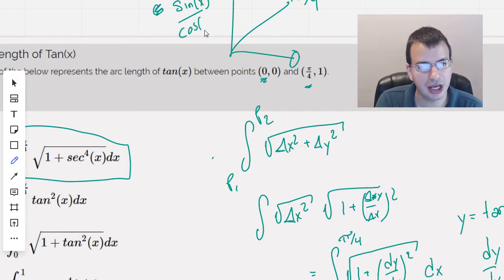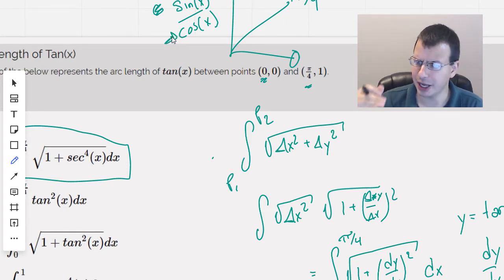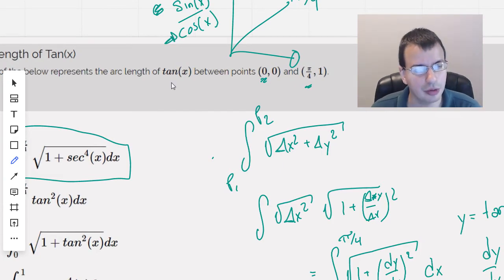And cosine goes from 1 to square root of 2 over 2, so we don't ever get 0 in the denominator, which is good, which is kind of what we're looking for.